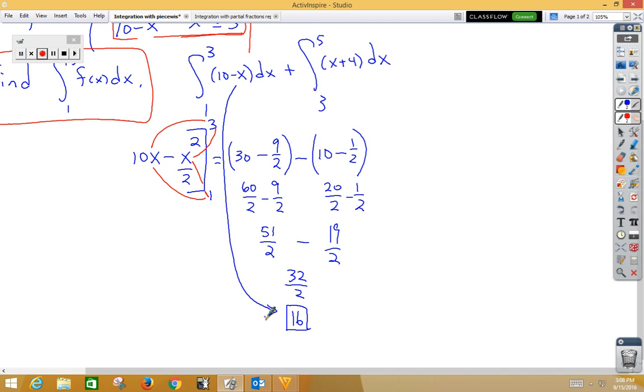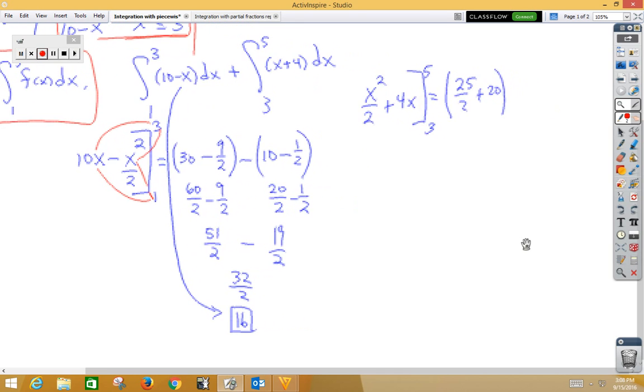Our second integral: if we integrate x, we get x squared over 2. If we integrate 4, we get 4x. Our bounds now are 3 to 5. Plug in our top bound, we get 25 over 2. Plug in to our second piece, we get 20.